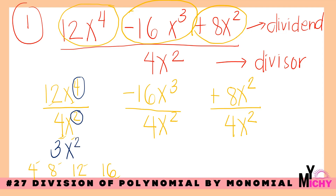The next term is negative 16 divided by 4, which is 4. Negative divided by positive gives a negative answer. Then x³ divided by x²: the exponent is 3 minus 2 equals 1, which is imaginary — so we just write x. The result is negative 4x.